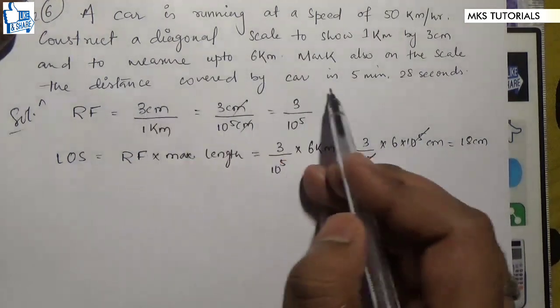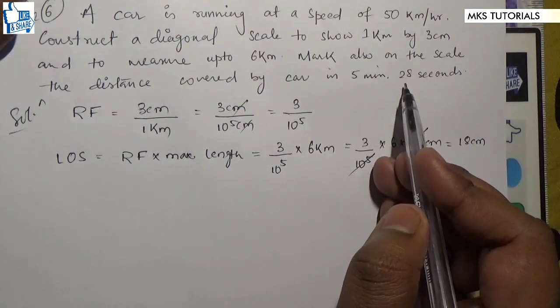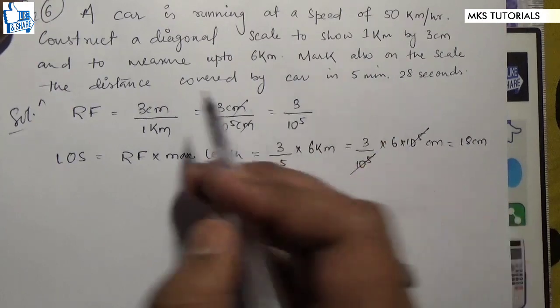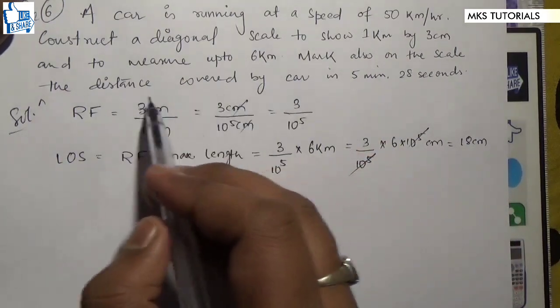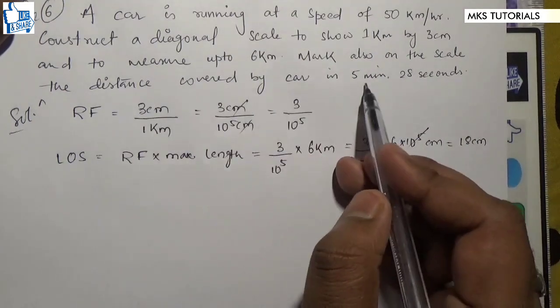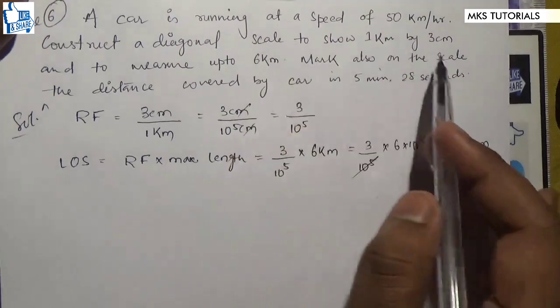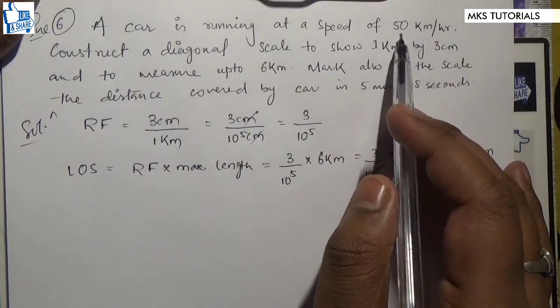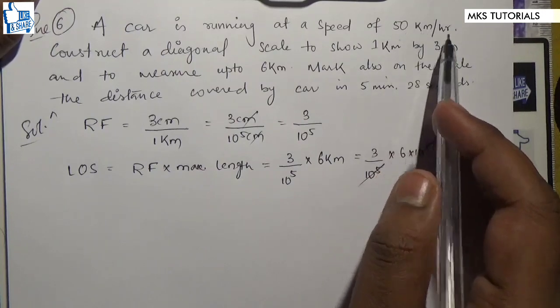We have some time recording, and we have to show the distance. How can we do the distance? 5 minutes and 28 seconds. We have speed, that is 50 kilometers per hour.